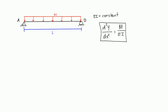You can integrate this equation one time to get dy/dx, and if you integrate it once, you get your slope. So you can find the slope along any point of the span. If you integrate it again — integrating dy/dx — you get y, and you get your deflection at any point on the span. This moment is your internal moment along one span.